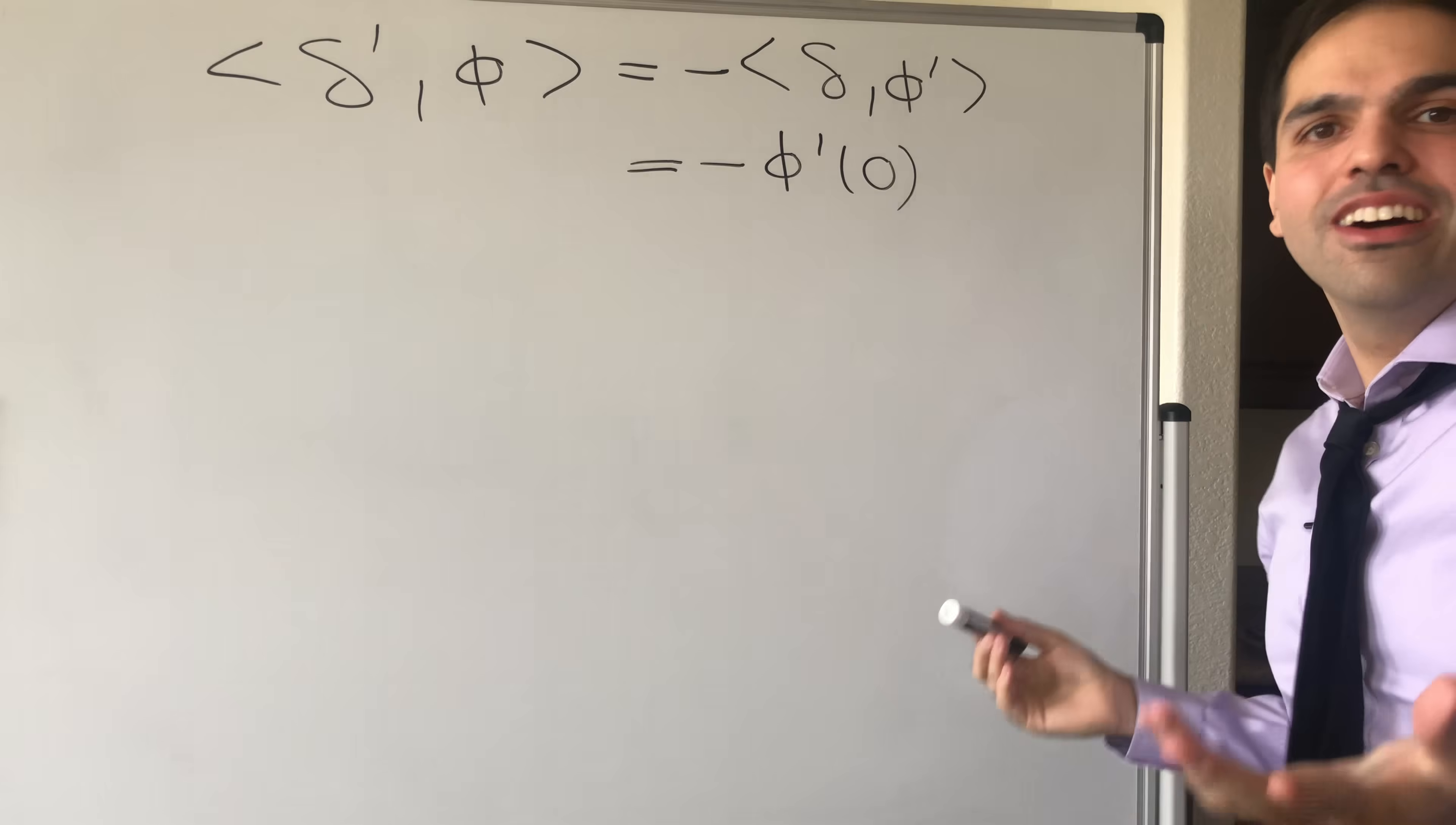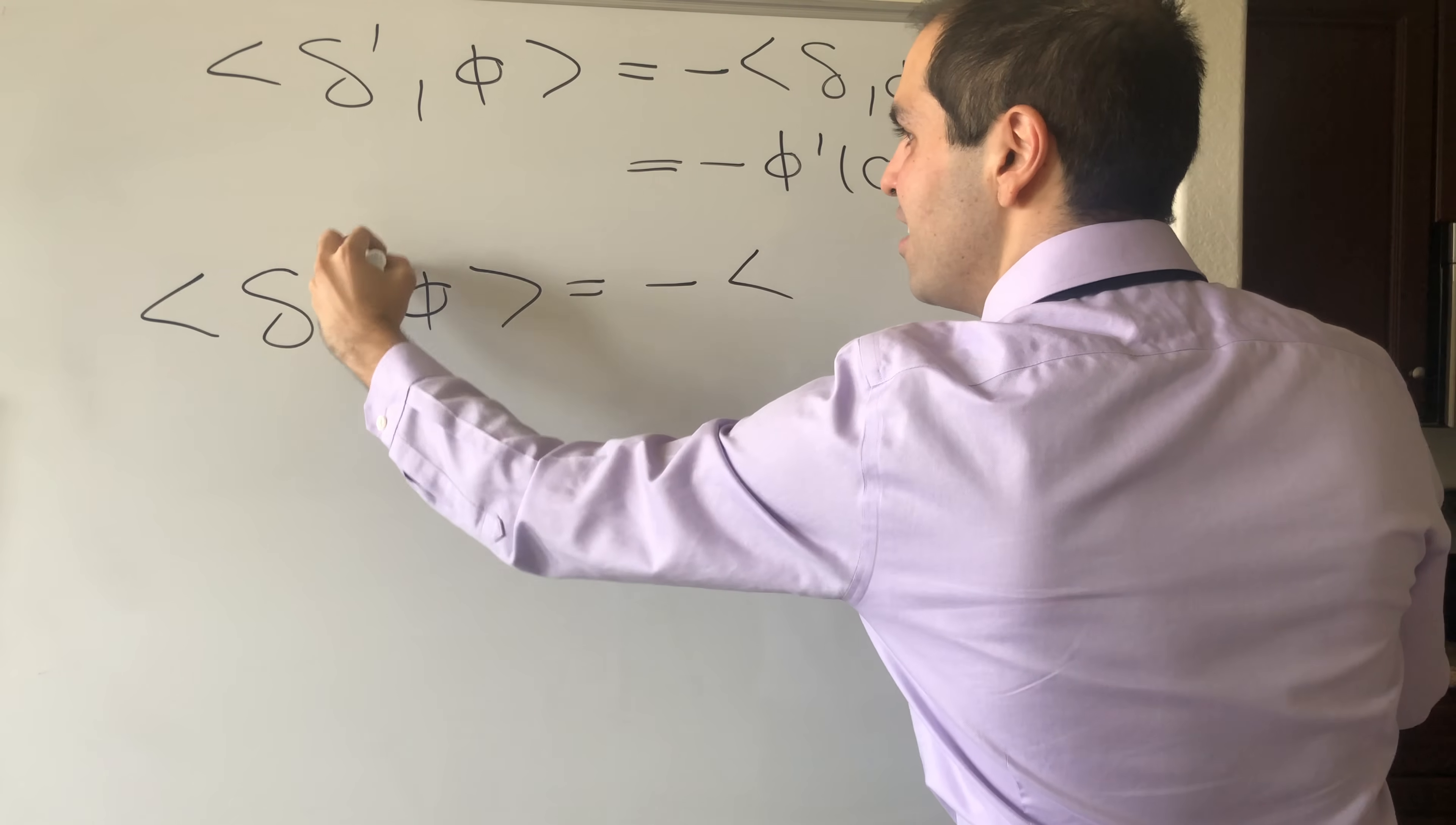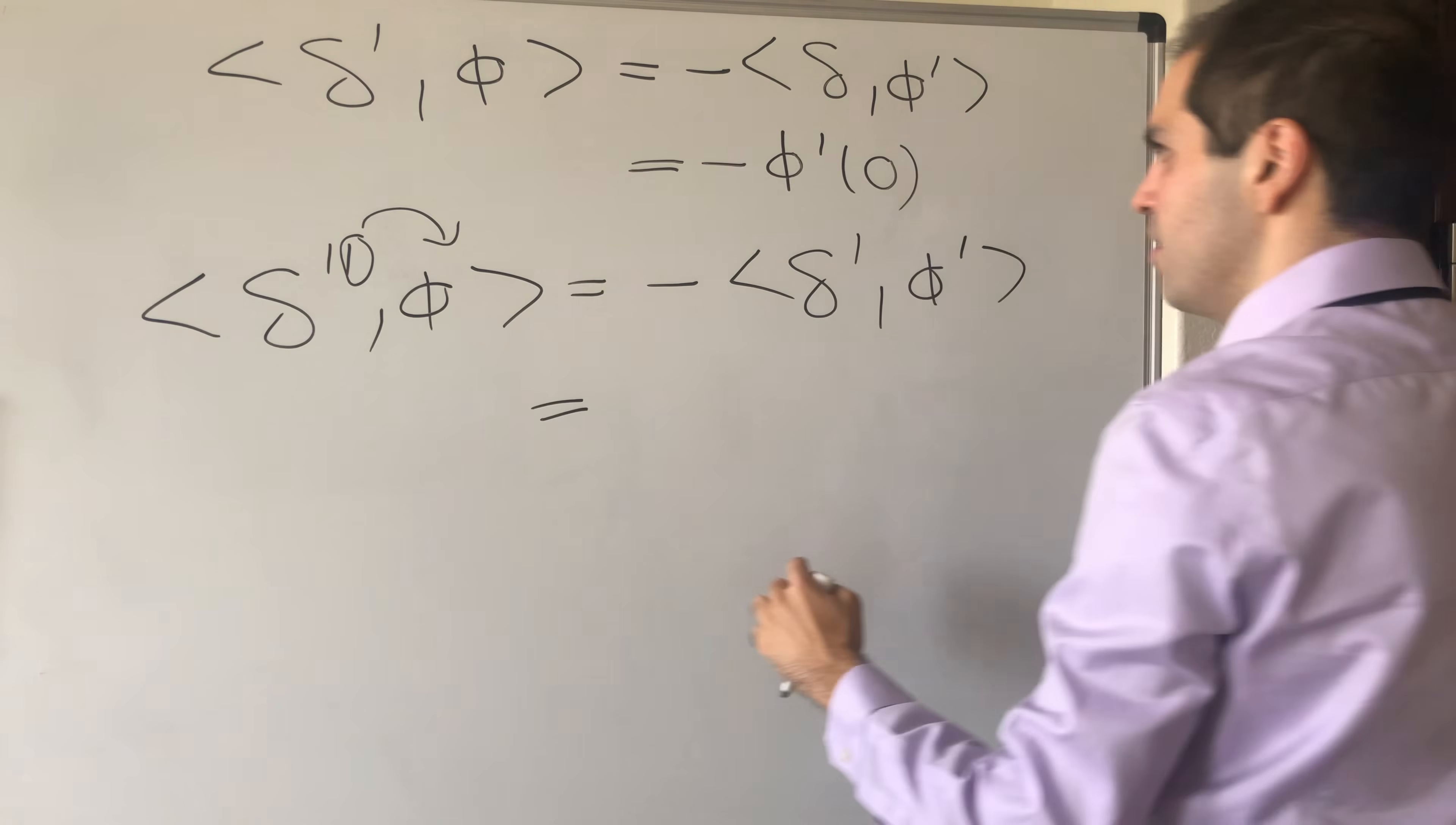Well, and the cool thing is, you know, if you've done it once, you can do it again. So what is now the second derivative of the Dirac delta? Well, by definition, it becomes minus, you can transfer one derivative here, so it's minus delta prime applied to phi prime.